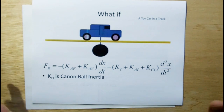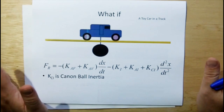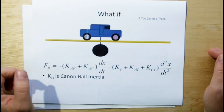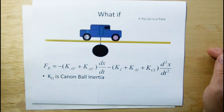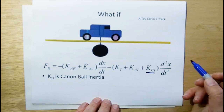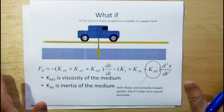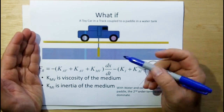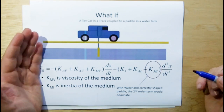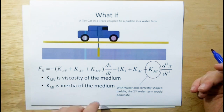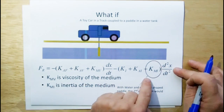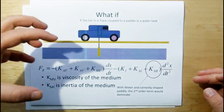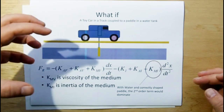What if we take this one step further and put a slot underneath the track? The kid can't see the slot. We connect a cannonball to the car. This added inertia is going to make the car feel real heavy to the child, as the felt inertia of the car increases because of this extra mass. We add the inertia of the cannonball into the second order term. But what if instead of the cannonball, we put a trough of water, and coupled to the car is a little paddle that sits in the water? Now we have a more complex coupling to the car that's going to give both first order effects — the viscosity of the medium — and the inertia of the medium in the second order.